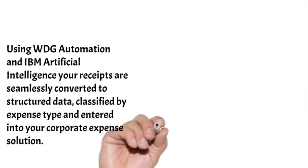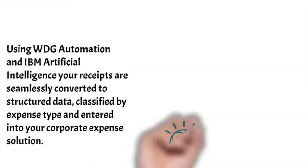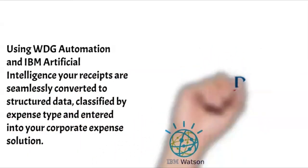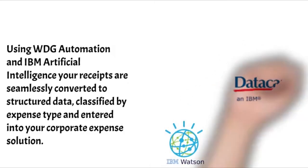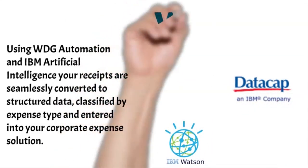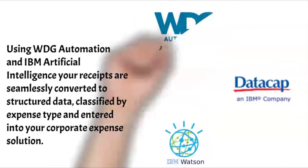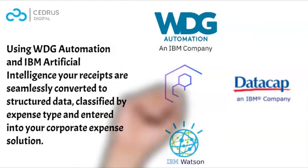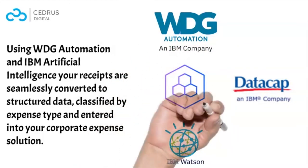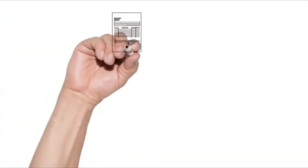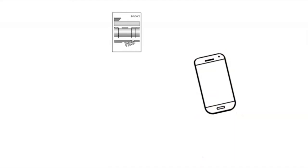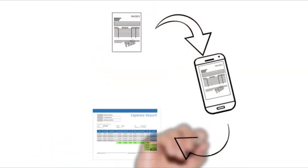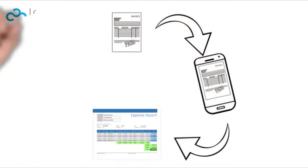Using WDG Automation and IBM Artificial Intelligence, your receipts are seamlessly converted to structured data, classified by expense type, and entered in your corporate expense solution. Check out how Reseda and Cedrus Digital takes the struggle out of business expense submission.